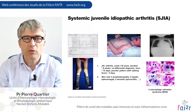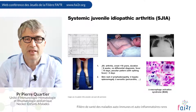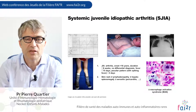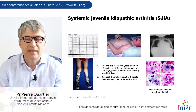Systemic JIA is a very peculiar disease, essentially the same as adult-onset Still's disease, starting early in childhood with spiking fever, skin rash, joint pain, and muscle pain, sometimes pericarditis or myocarditis. In some patients there is early aggressive arthritis, while in others arthritis may be delayed. Some patients also face the risk of life-threatening macrophage activation syndrome.